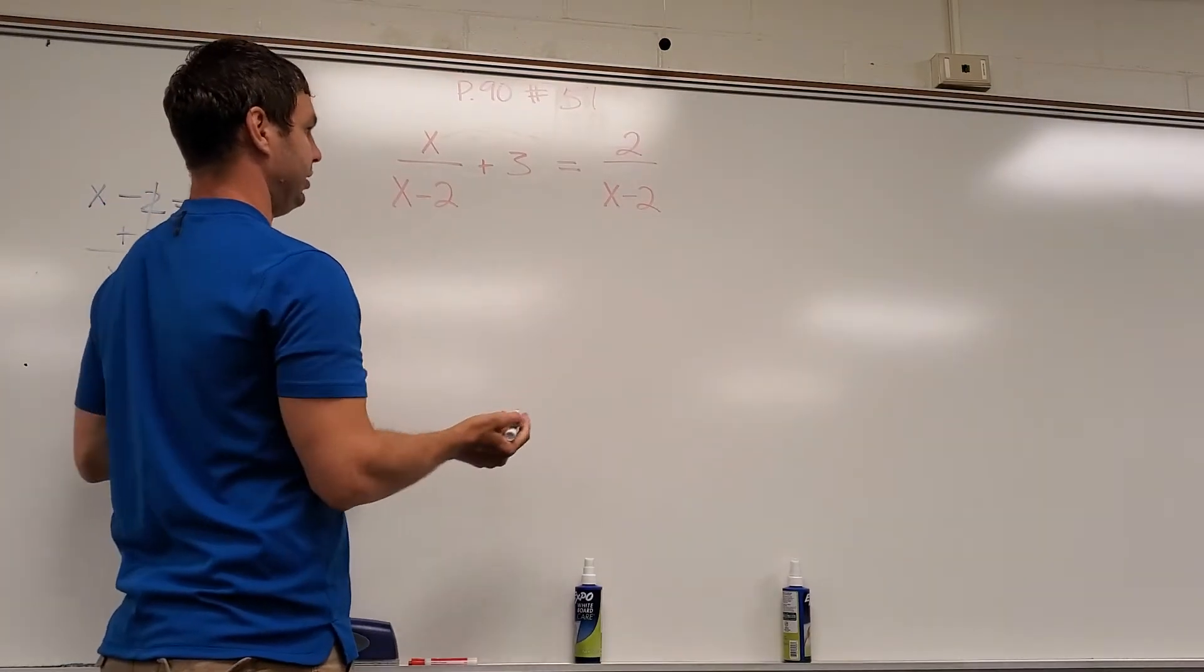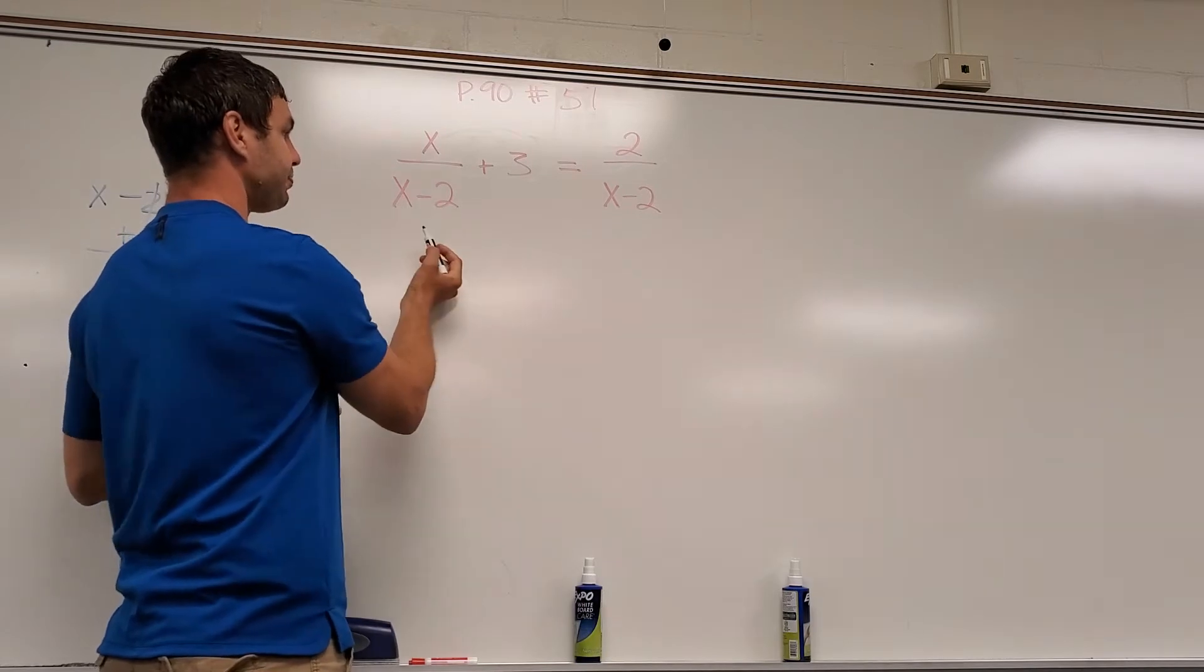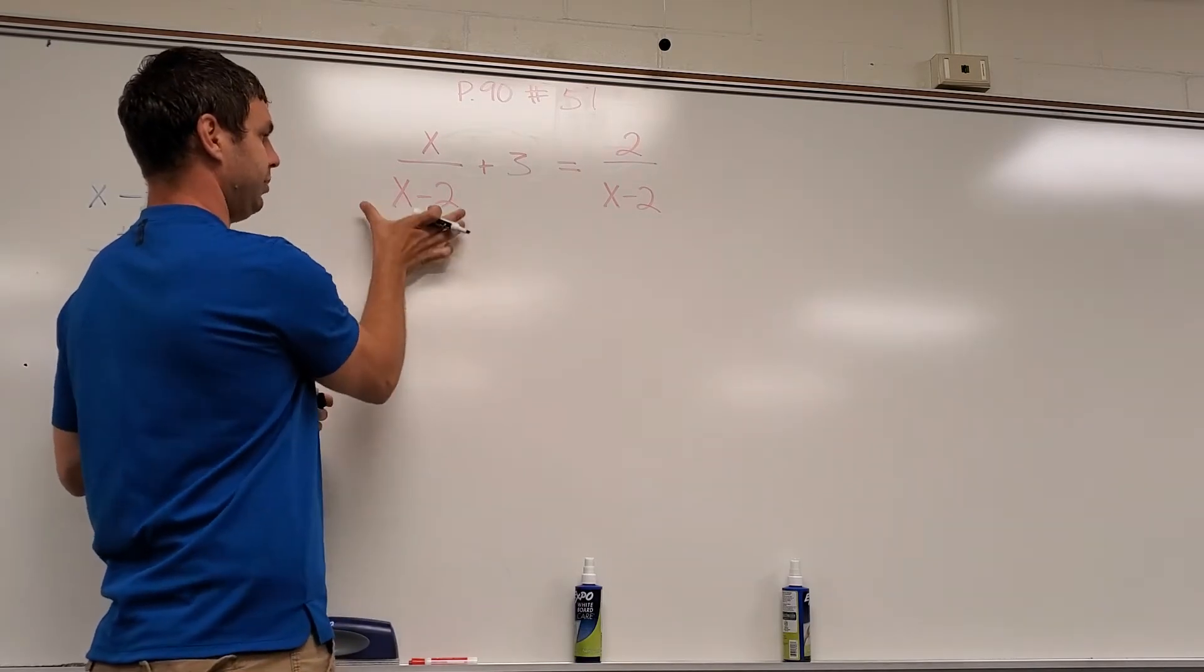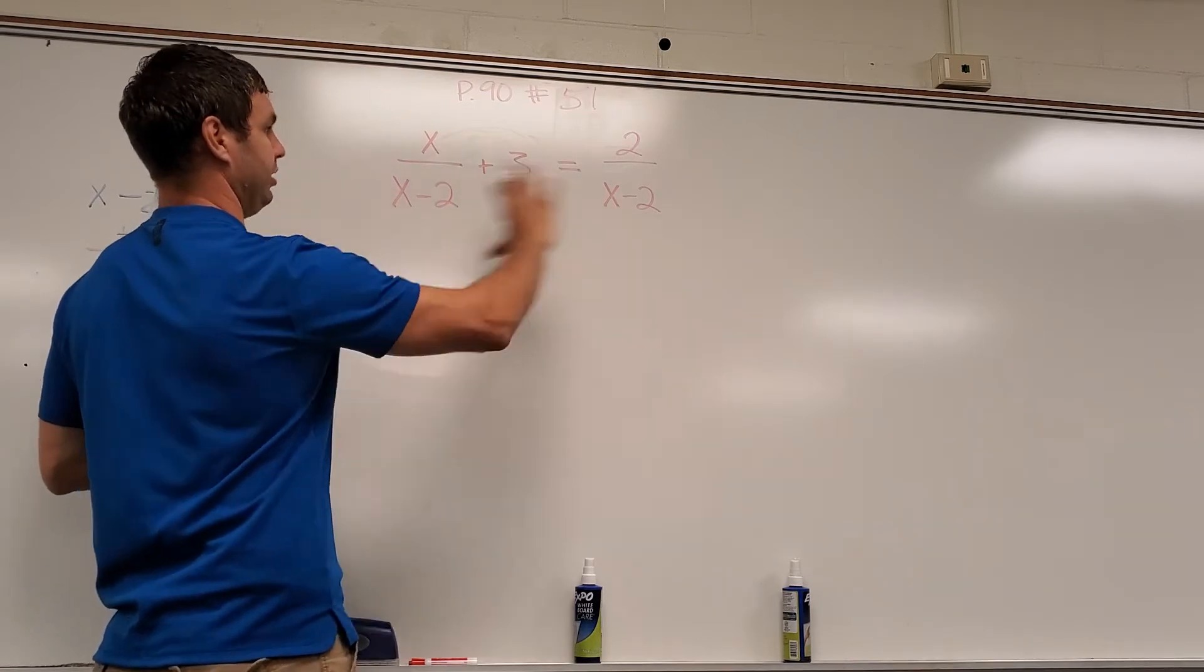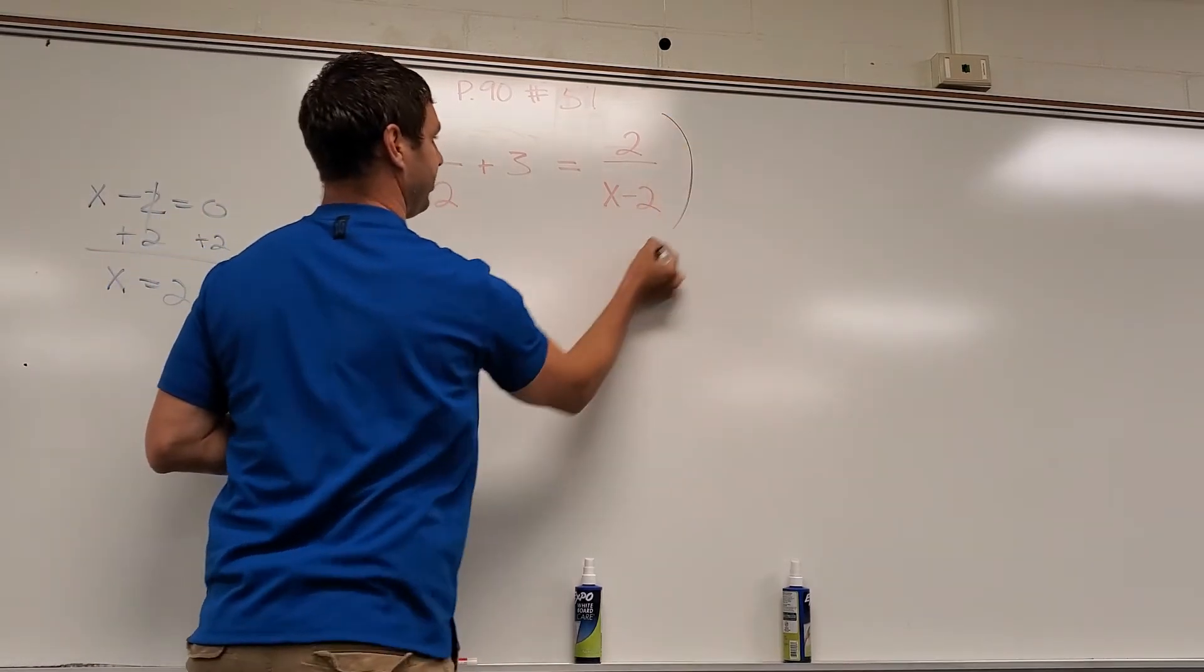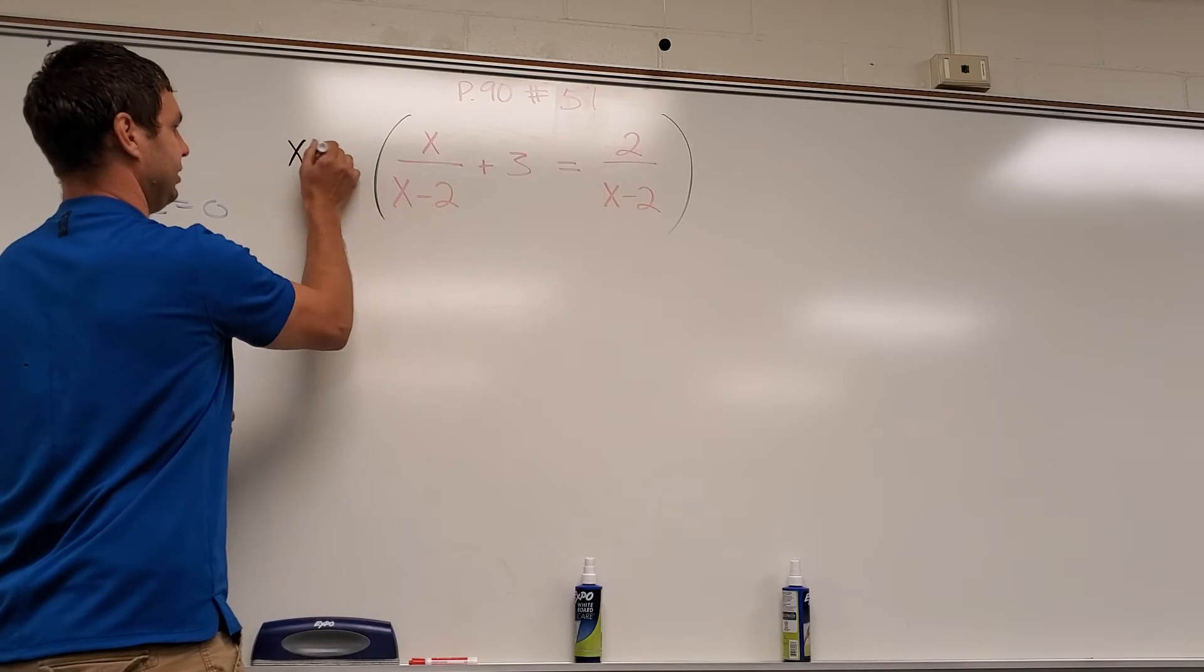To do this one, I am going to multiply both sides by the quantity x minus 2. In fact, I can multiply the whole thing like that, if you want to think of it that way. Times x minus 2.